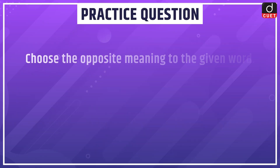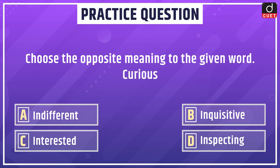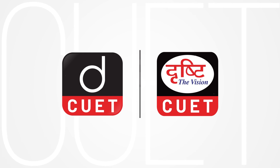Now it's time for the practice question. Choose the opposite meaning of the given word 'curious' — indifferent, inquisitive, interested, or inspecting. Send your answer in the comment section. Stay tuned for the next episode, thanks for watching.